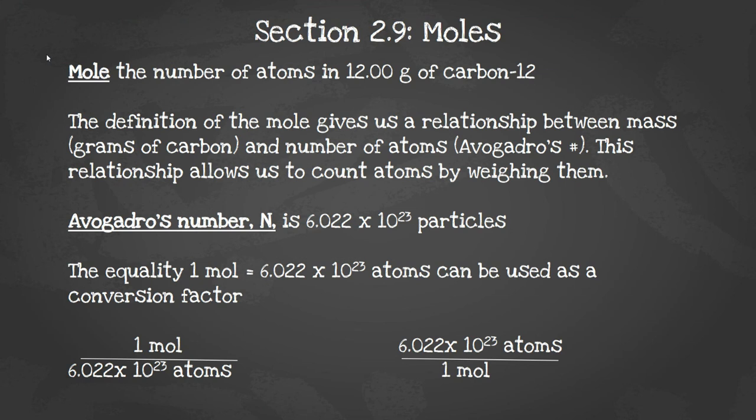Hello, this is AP Chemistry Chapter 2, Section 9 on moles and mole conversions. A mole is the number of atoms in exactly 12 grams of carbon-12. The definition of the mole gives us a relationship between mass, which is the grams of the carbon, and the number of atoms, which is Avogadro's number.